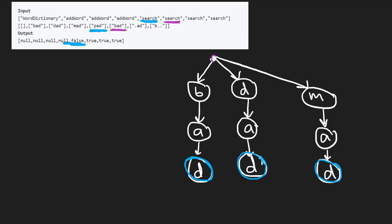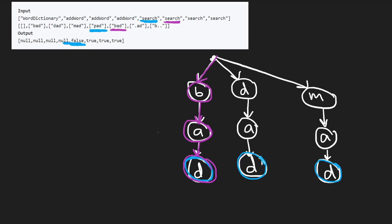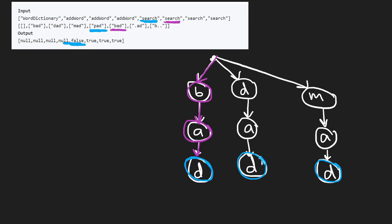Searching 'bad': start at root, find 'b' — yes it exists. Next character 'a' — the 'b' node has a child 'a', yes. Last character 'd' — the 'a' node has a child 'd', yes. And it's designated as end of word (marked blue), so we return true.